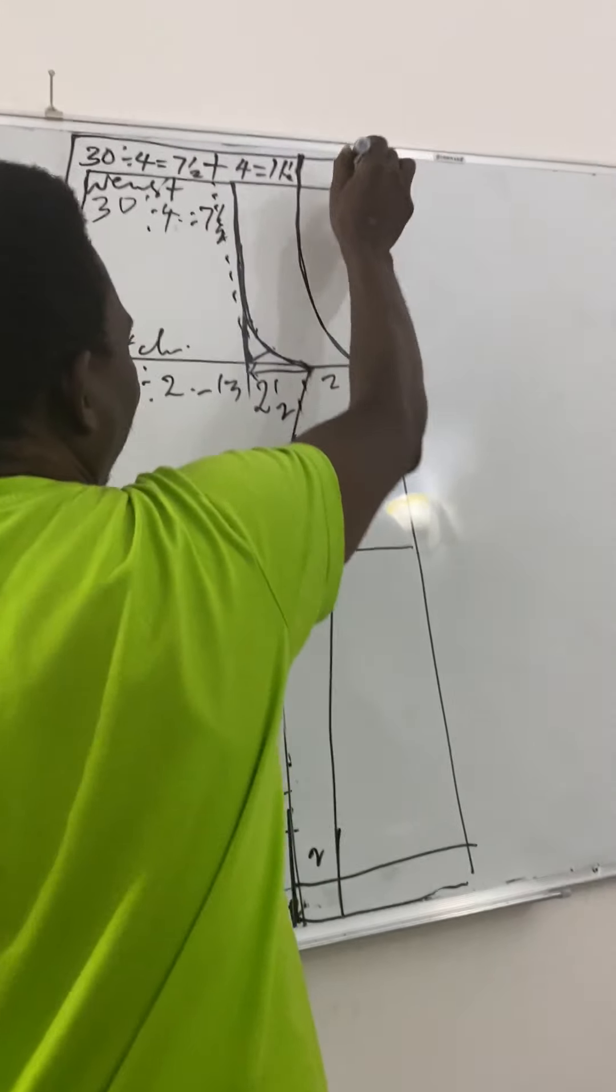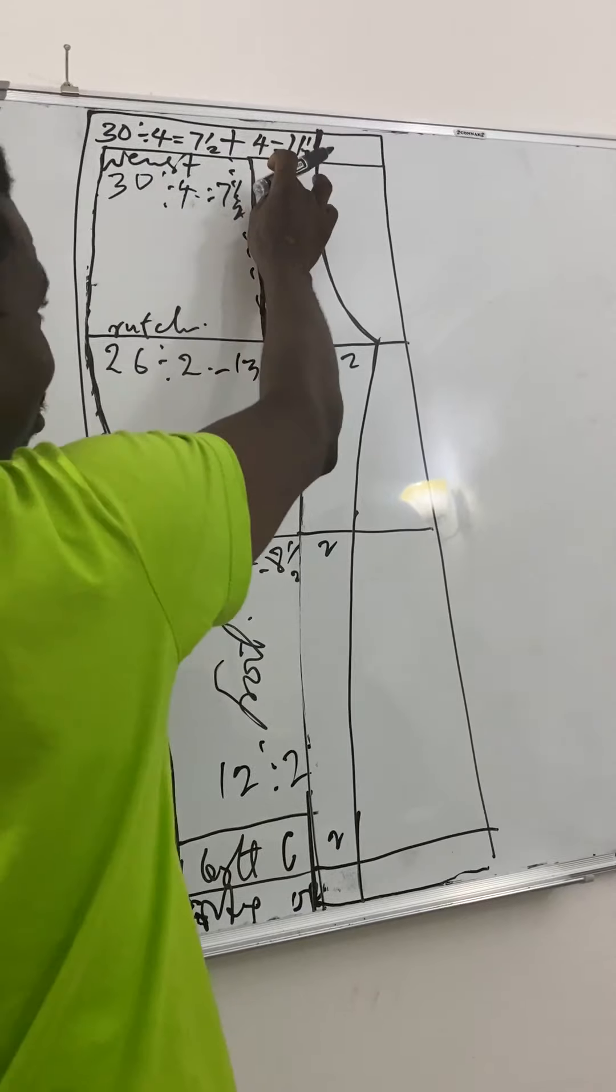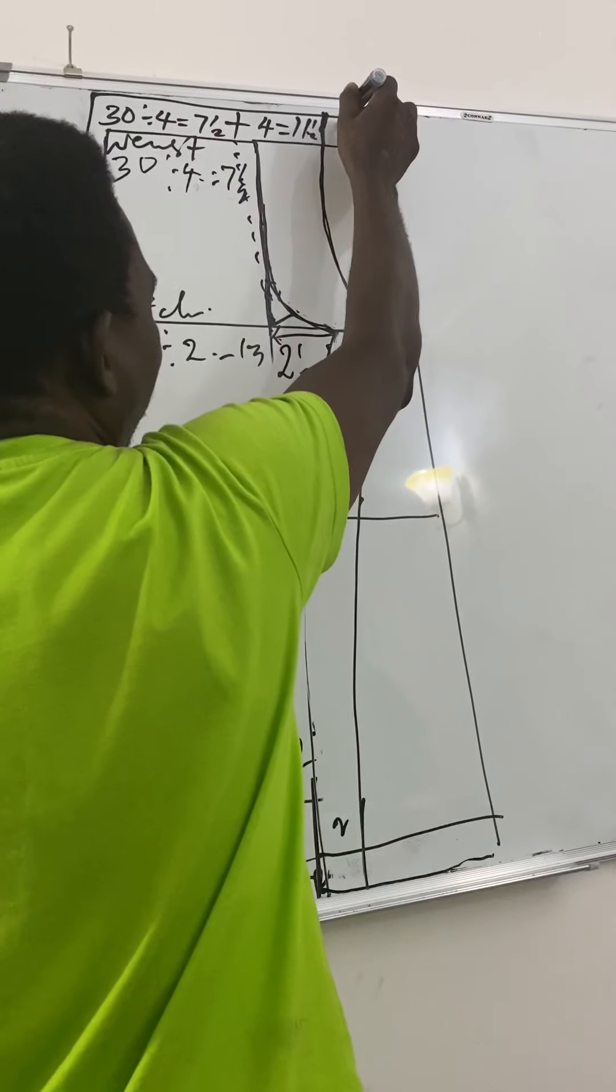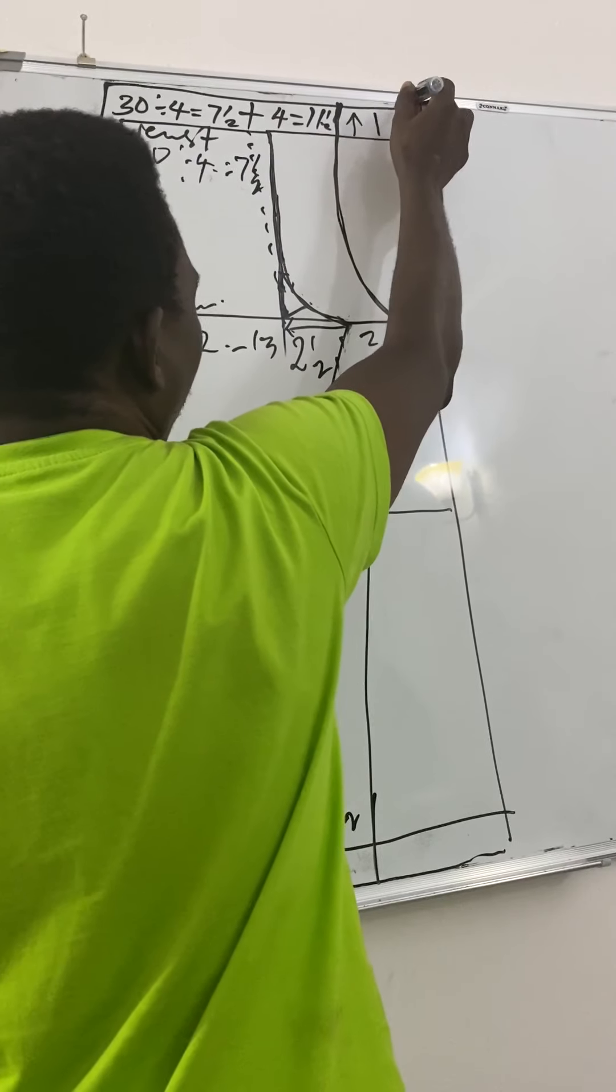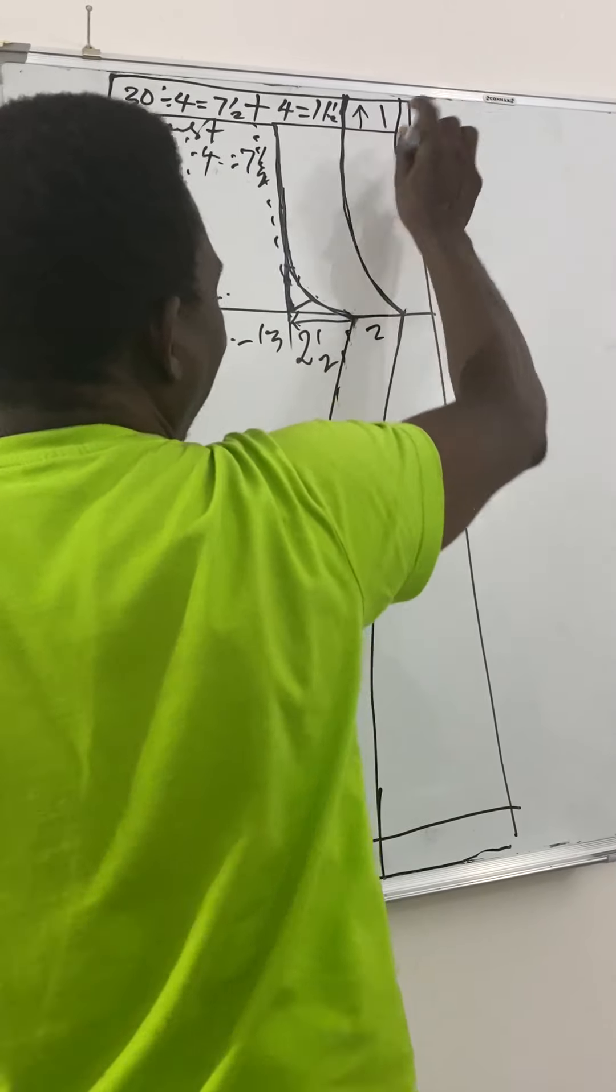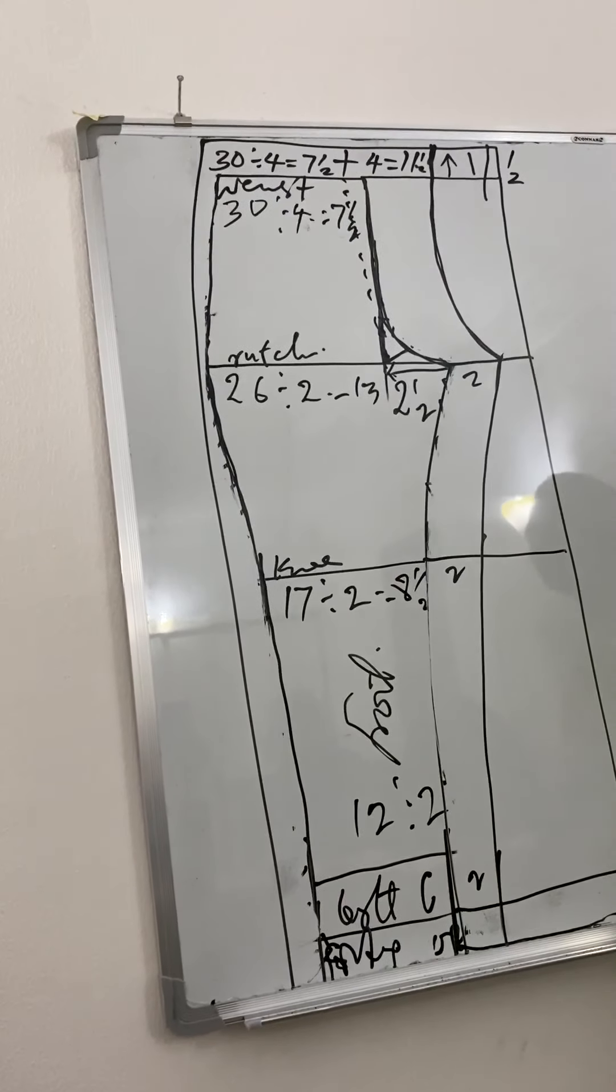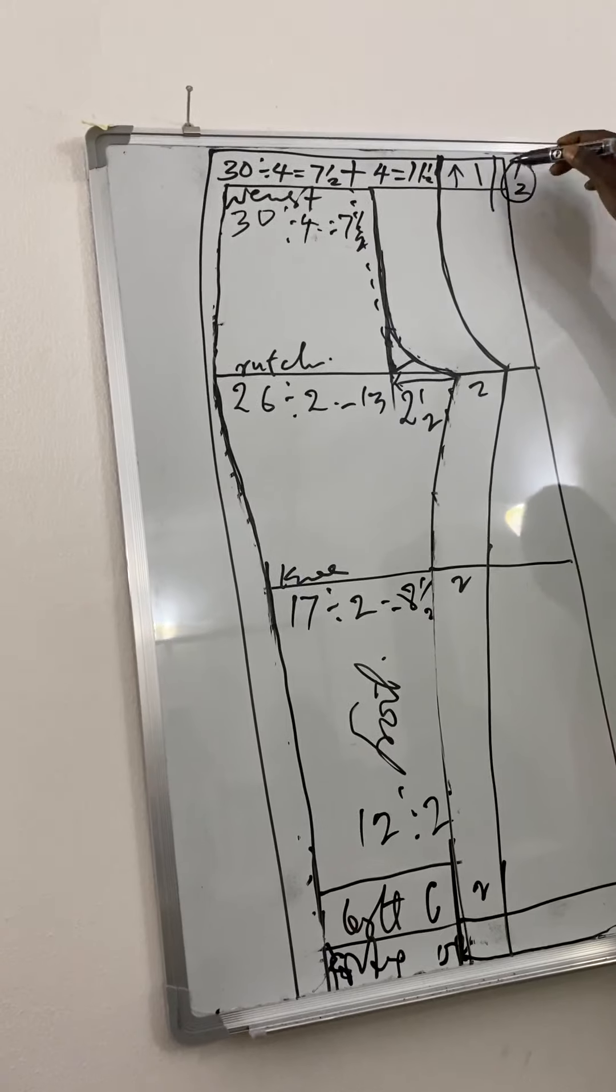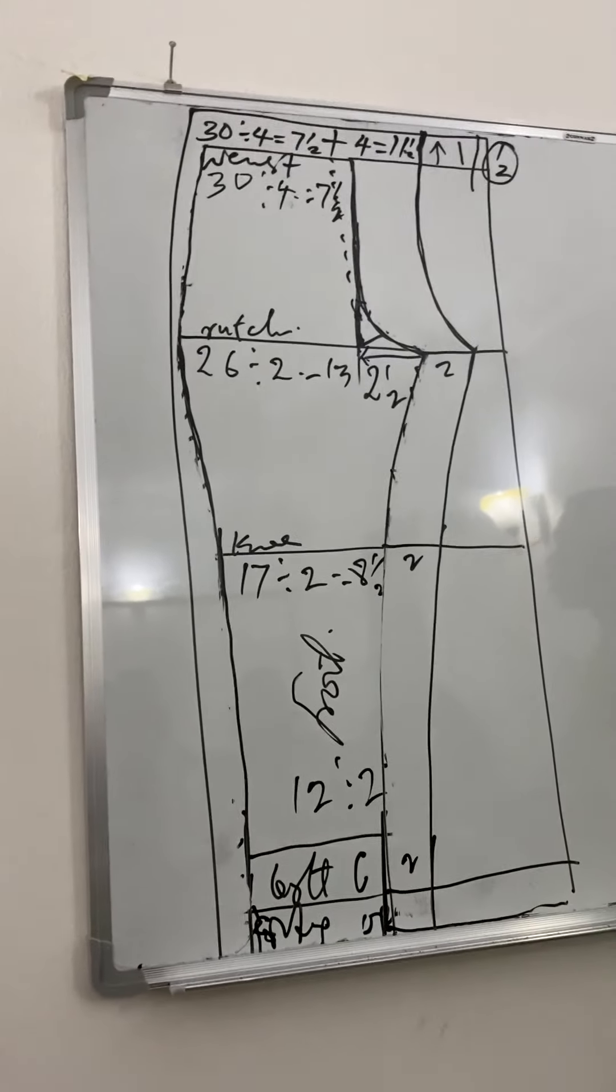This is the length for the front pattern. In this, you go up by 1 or 1 and a half. If somebody has here, you can do 1 and a half. Here, you can do 1 and a half.